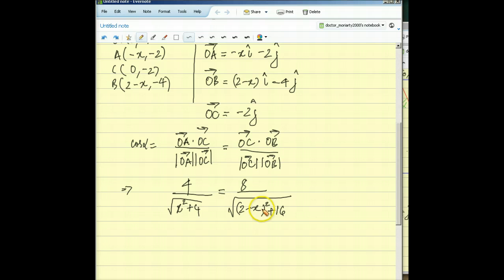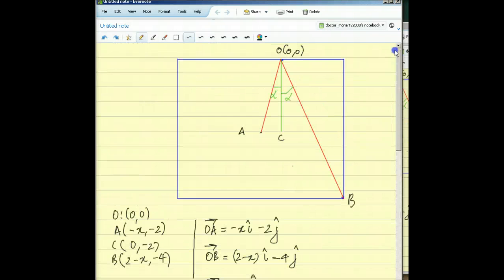Now this should give you a quadratic equation in X which will give you two solutions. You need to figure out for yourself which of those two is the correct solution based on what the problem is asking you. Remember, the problem said at what point does it strike on the front edge so that you can calculate the displacements AO and OB.